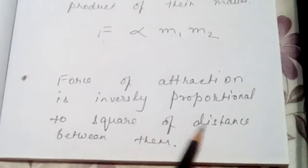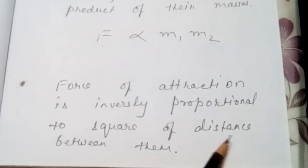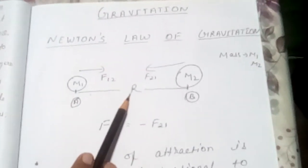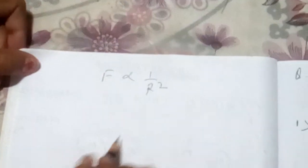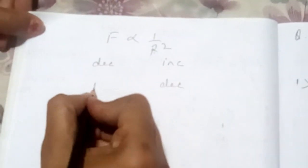Next he has given the law: force of attraction is inversely proportional to square of the distance between them. Distance is, suppose we have taken M2 center of the mass and this is center of the mass and we have taken distance R. So I am showing you how it is inversely proportional. F is inversely proportional to R square. If distance between them increases, force of attraction decreases. And if two masses are at lesser distance, means distance decreases, force of attraction increases.